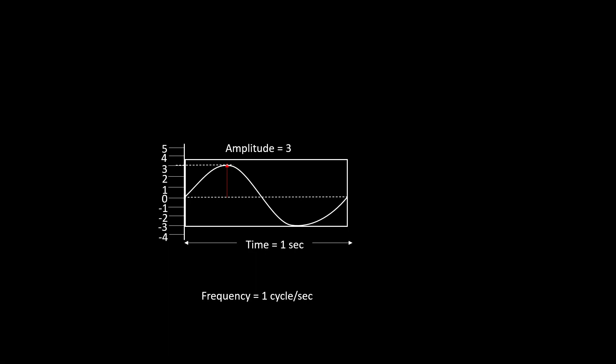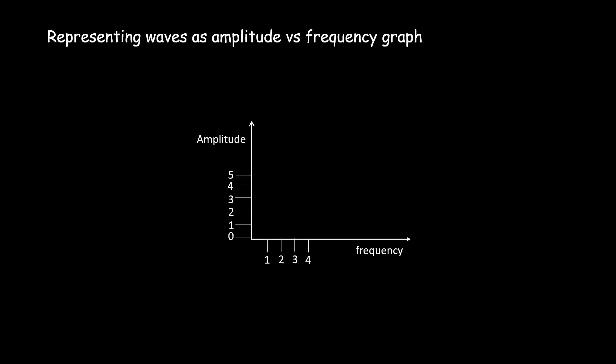For this sine wave, let's create an amplitude-frequency graph. This graph will help us visualize the frequency component of our sine wave. In an amplitude versus frequency graph, the vertical axis represents amplitude and the horizontal axis represents frequency.